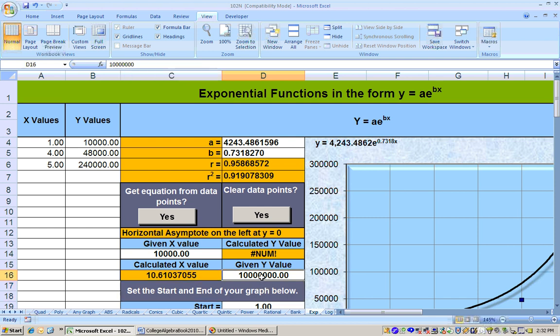When will it be 10 million? Well, I just typed in 10 million for the y value, and it tells me in 10.61 years there should be 10 million Internet domain names. So that would be 10.61 years after 1990. Somewhere in between the year 2000 and 2001, that's when there was 10 million Internet domain names.